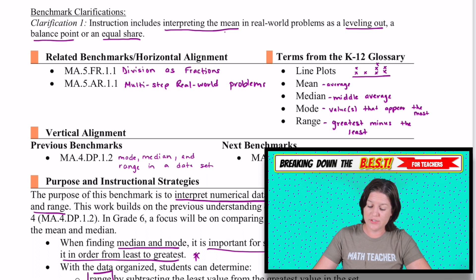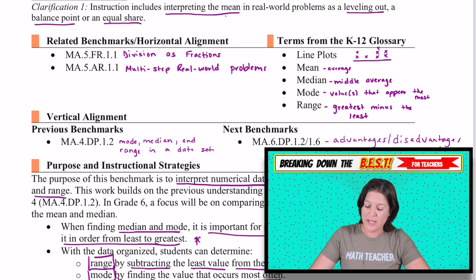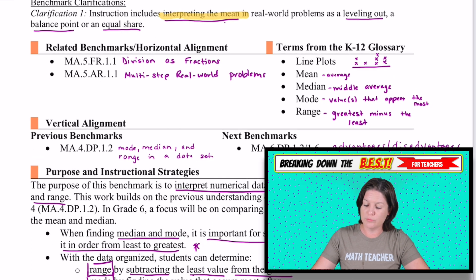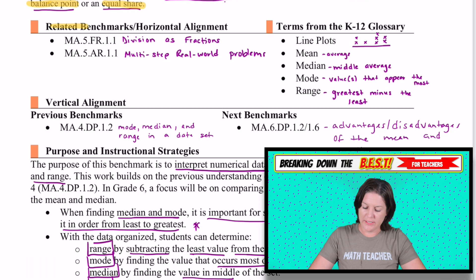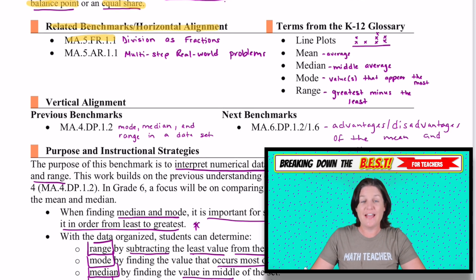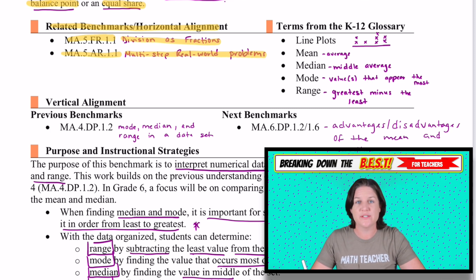Some benchmark clarifications. It says that instruction includes interpreting the mean in real world problems as leveling out, finding the average. It's a middle point, but it's like leveling out or a balance point or an equal share. Some related benchmarks to this one would be 5.fr.1.1, which is division as fractions. And then 5.ar.1.1 is our multi-step real world problems standard, which is a pretty heavy standard too.